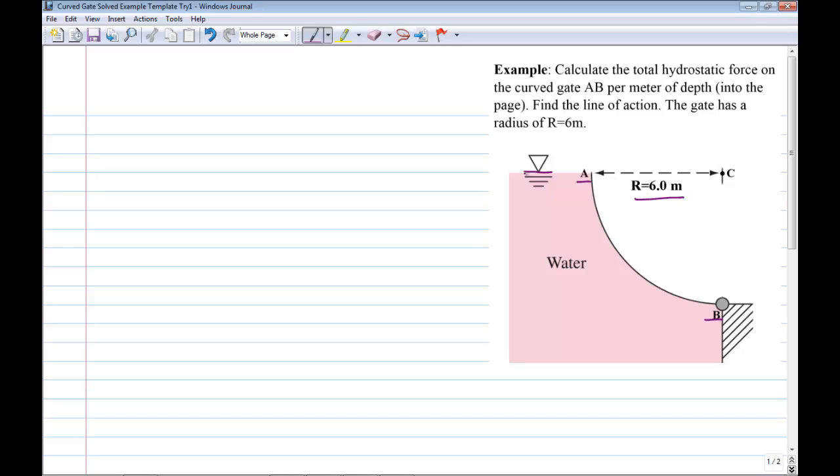So what we're going to do with these kinds of problems is always start with a free body diagram. So I'm going to call that FBD. I'm going to draw the water adjacent to the gate, and I'm going to draw a free body diagram for it. So here's our little section of water. I'm going to call this point A up here, and this is point B down here.